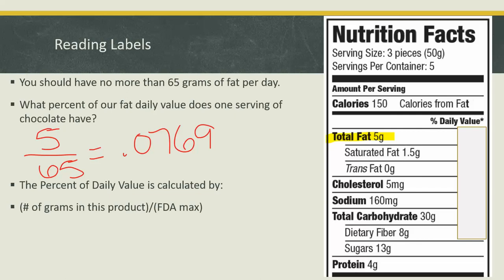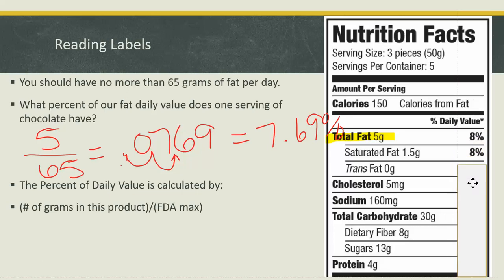Now we calculated this as a decimal. Remember, in order to change a decimal into a percent, you're going to move the decimal point two places to the right. So that means that this is 7.69%. The food label is going to round to the nearest percent. Let's compare our value with what they calculated — they said that this item has 8% of your recommended daily value of fat.